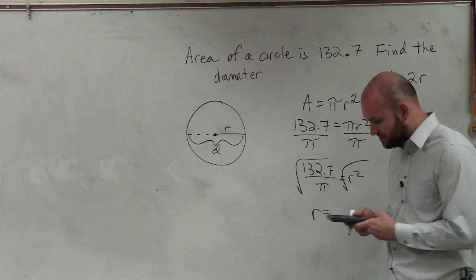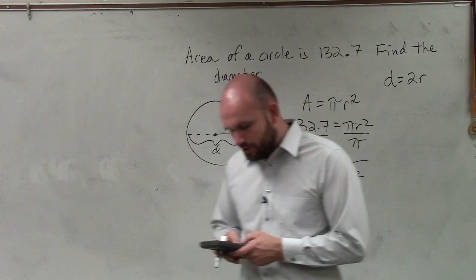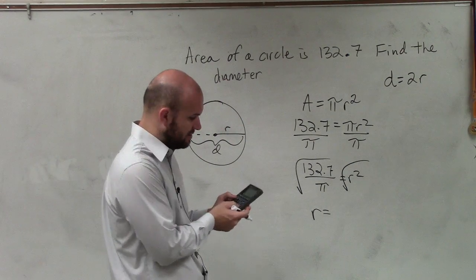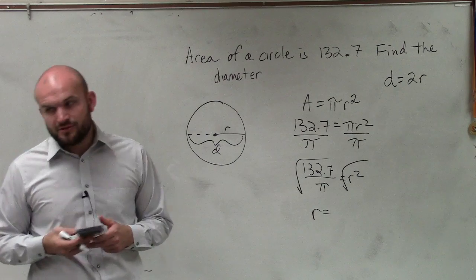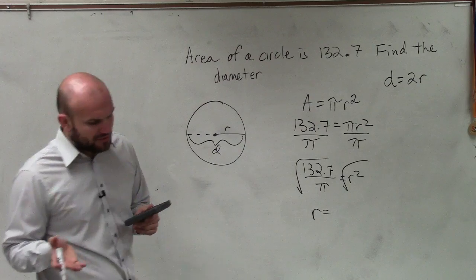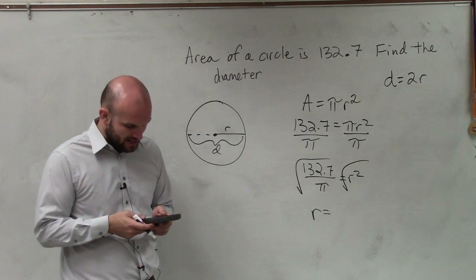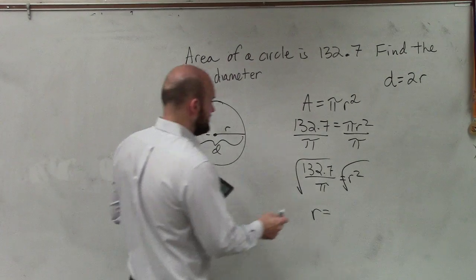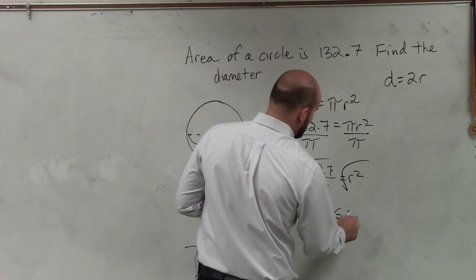Therefore, r equals, and this is what I type in my calculator: 132.7 divided by the symbol pi in my calculator. Do not approximate using 3.14 unless told to do so. And I get 42.2397219. And then I take the square root of that answer, and I get rounded to the tenth is 6.5.